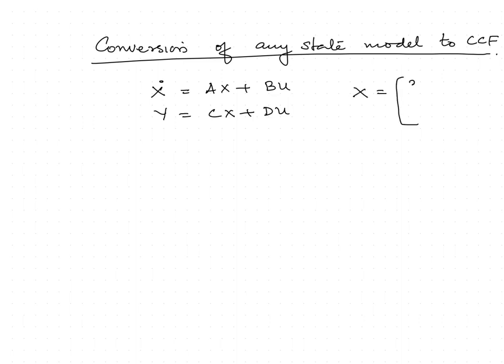Here x is a state vector [x₁, x₂, ..., xₙ]. For a system of order n, there should be n state variables to completely describe the system. The number of state variables n remains unique, whereas their identity need not be unique — meaning we can select another state vector x̄ with state variables [x̄₁, x̄₂, ..., x̄ₙ] to represent the same system. This concept is used in conversion from one state model form to another.